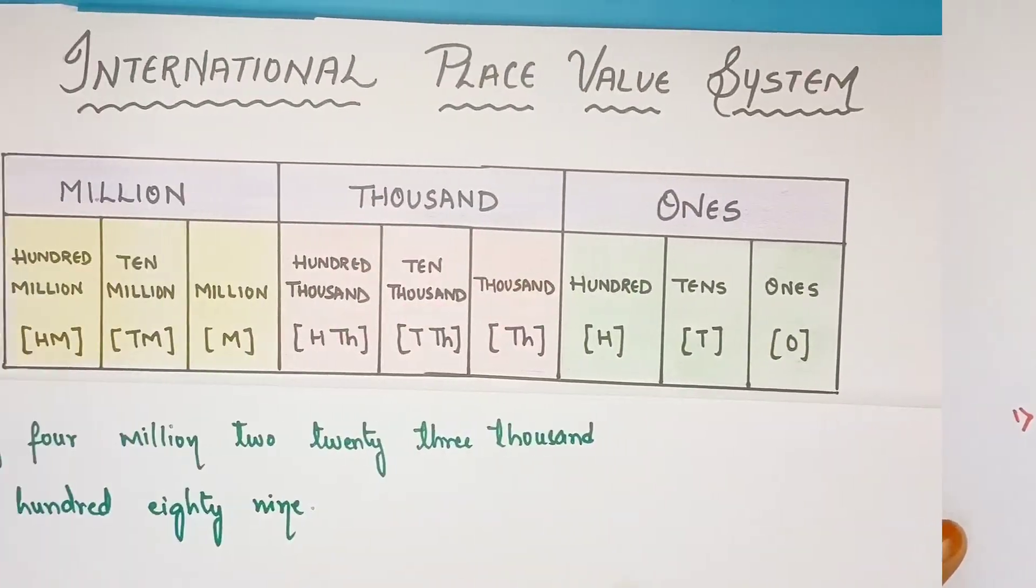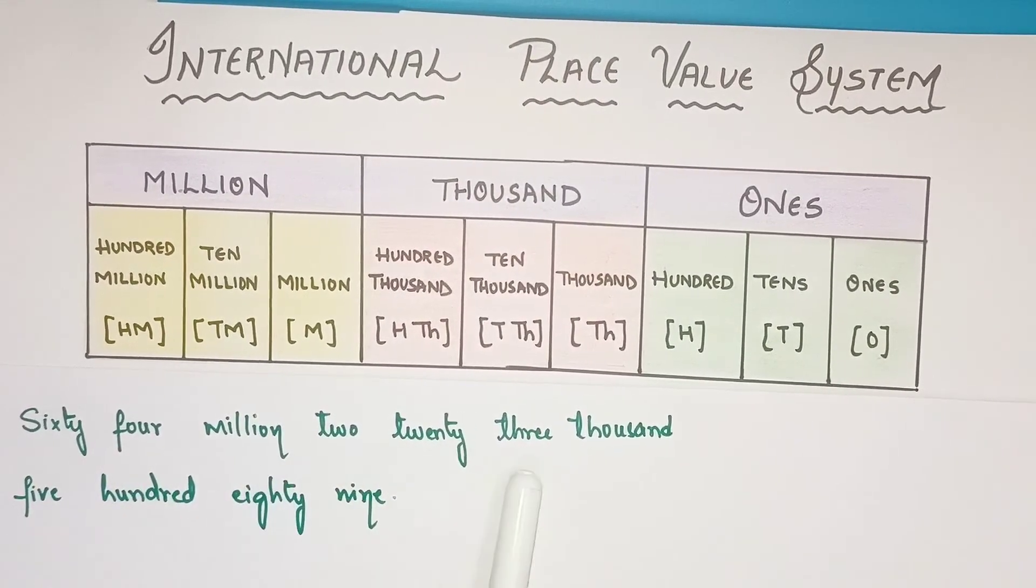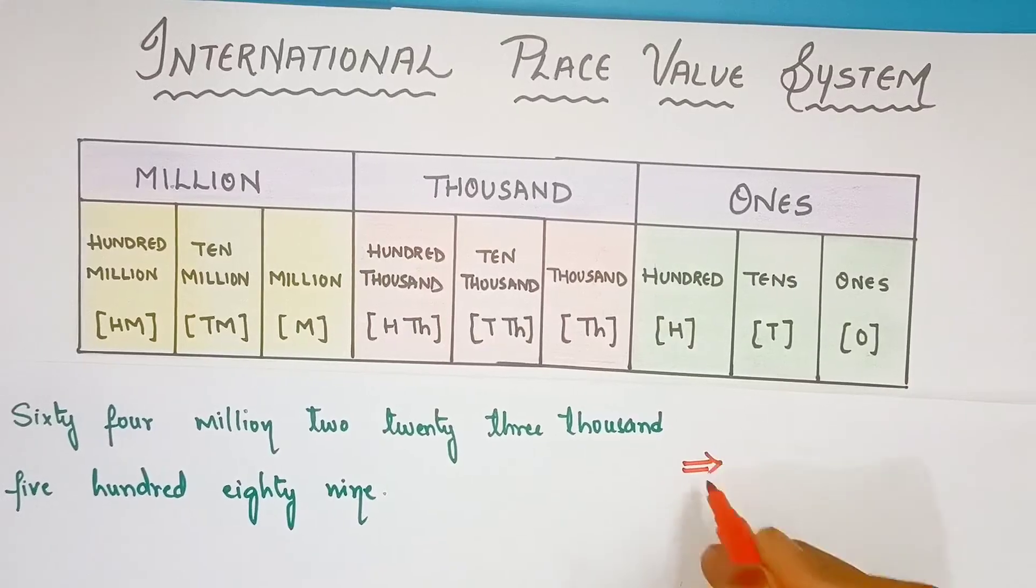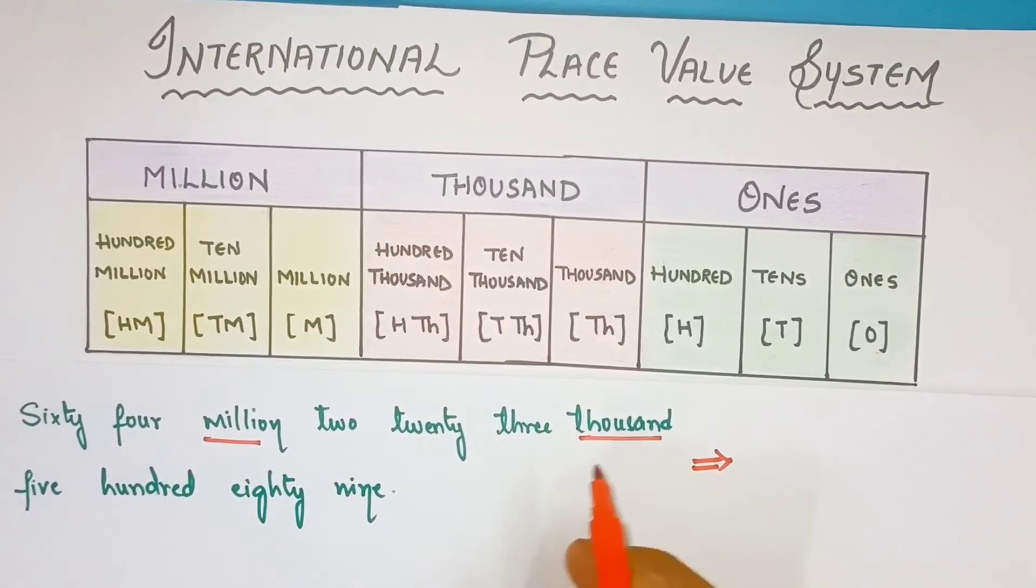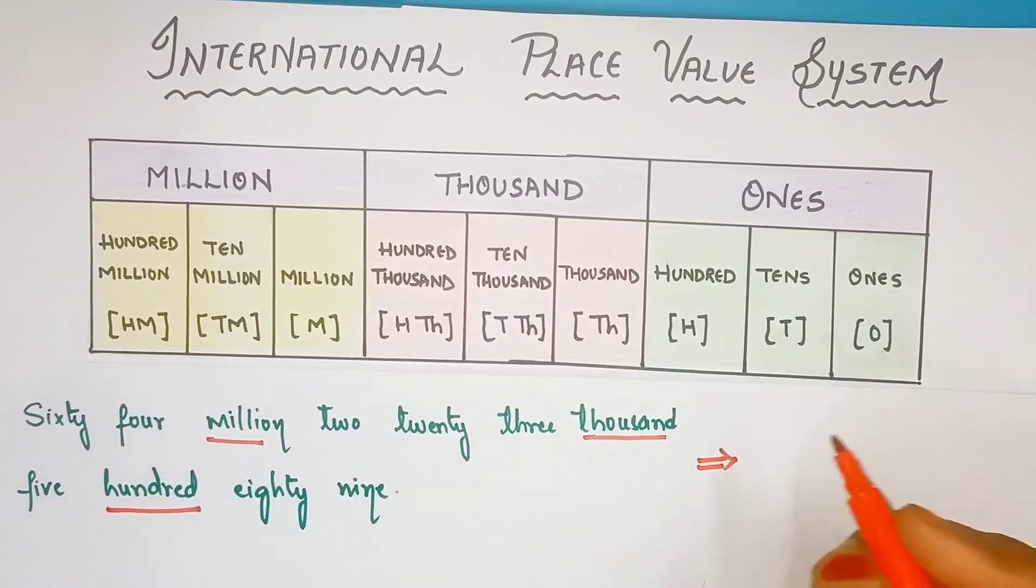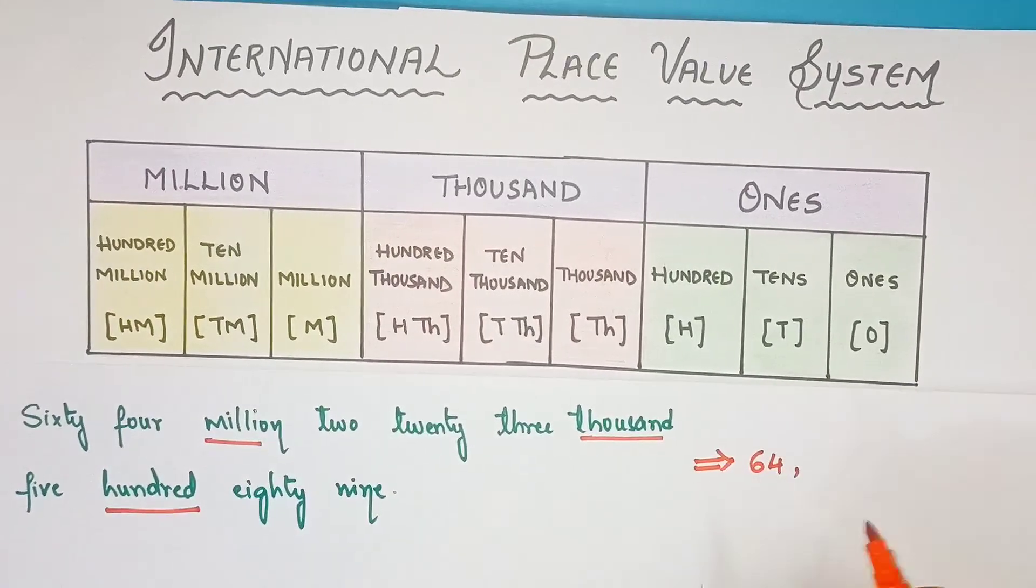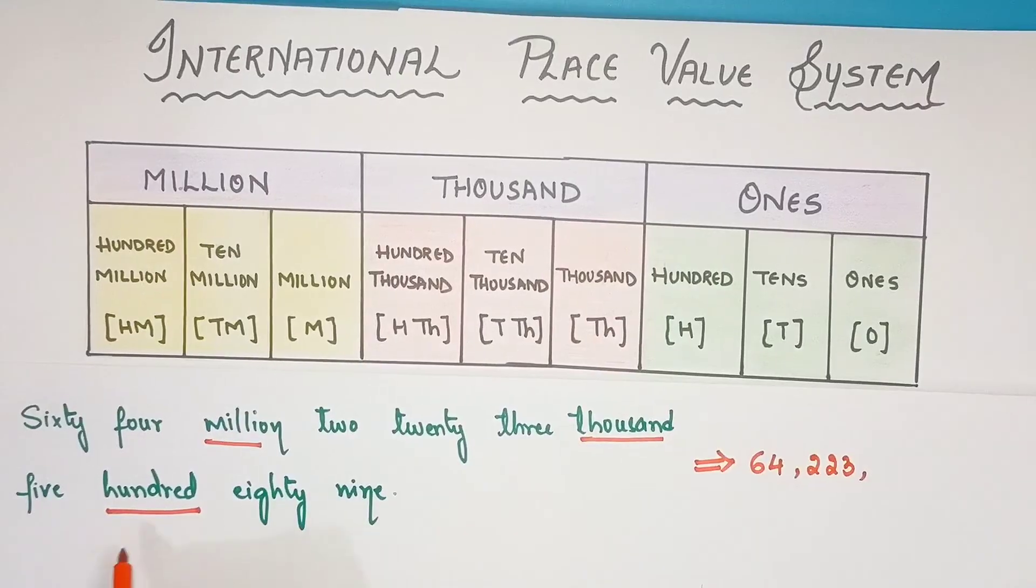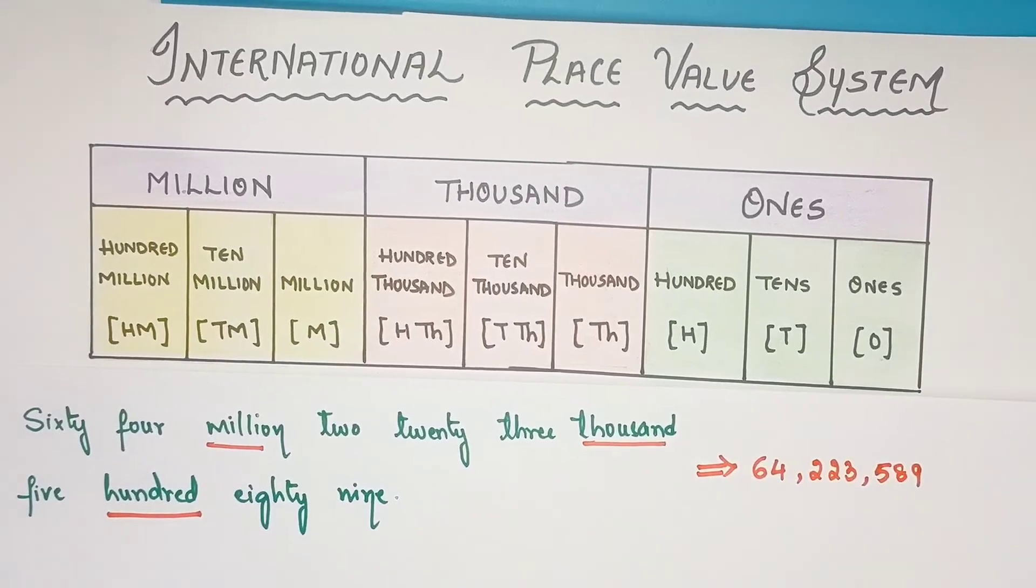Now, let's take another example. Here, it's written, 64 million, two hundred twenty-three thousand, five hundred and eighty-nine. Now, how we will convert this number? We will write it in number form.